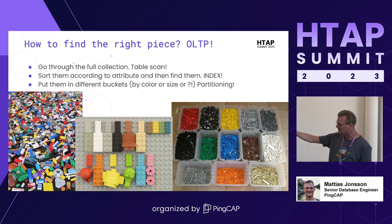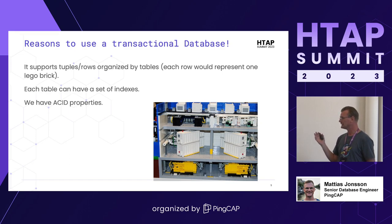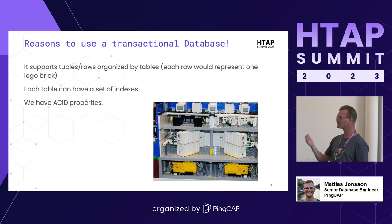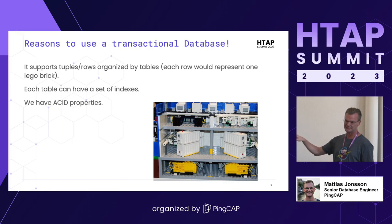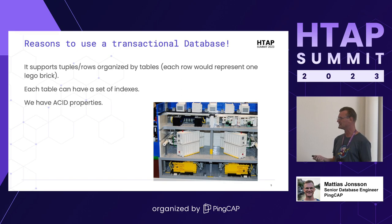Here we're talking about picking pieces, which is similar to online transactional processing. For example, if two people are using the same set of Lego, you can only use one piece at a time — you need the ACID properties. It's easy to represent the data within a table as well. Each table can have its own set of indexes, you can load data into a table, and you can use partitioning.